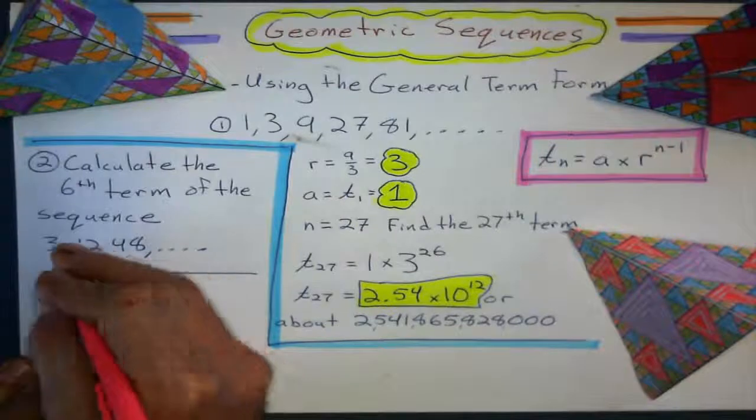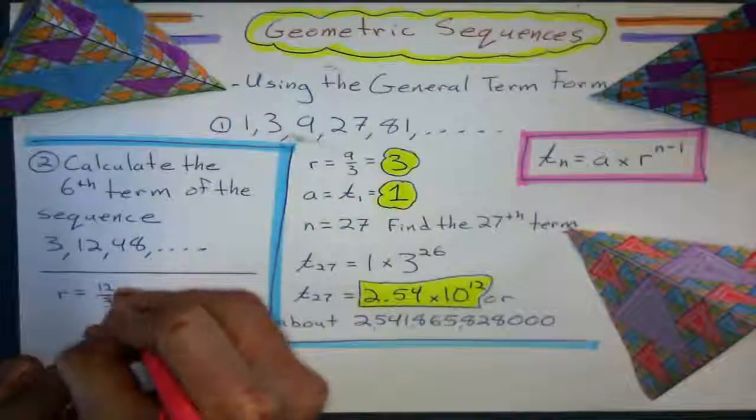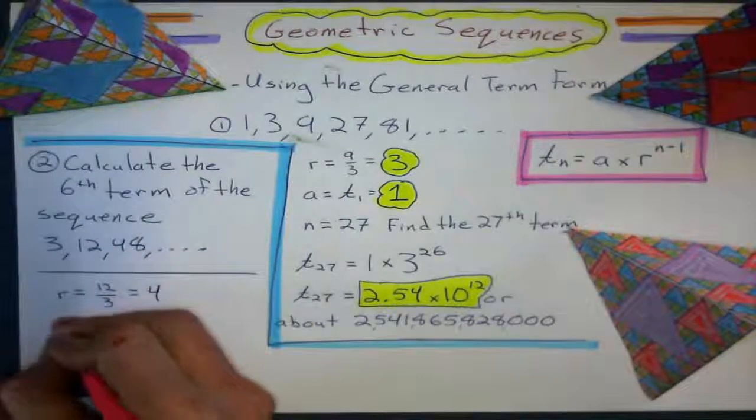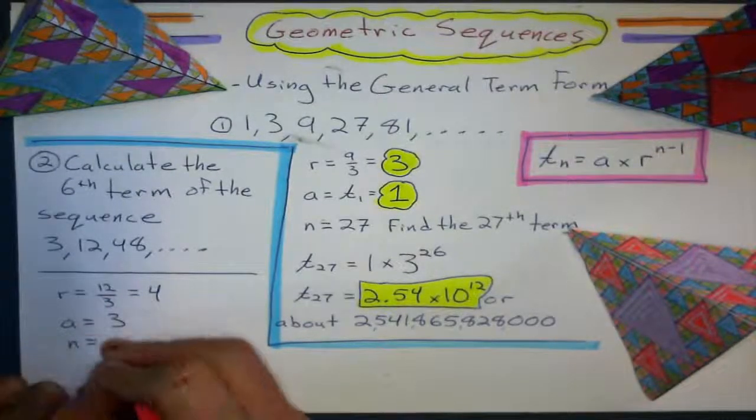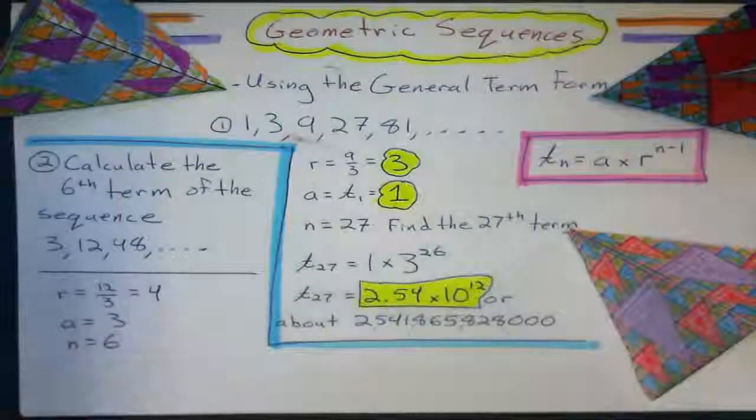Well, first step, what's the common ratio? Twelve divided by three. That's just four. What's the first term? That's just three. And what's n? I want six.